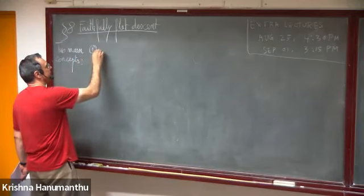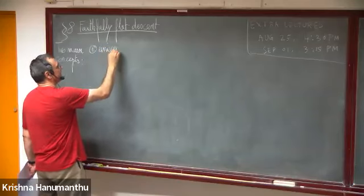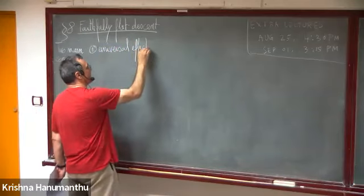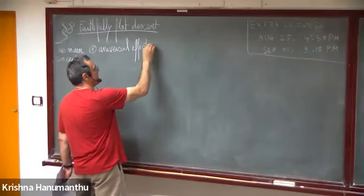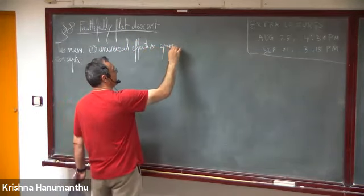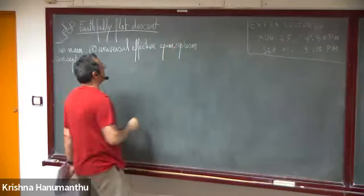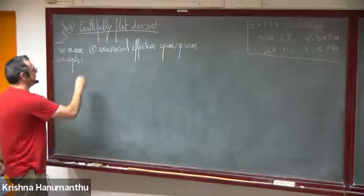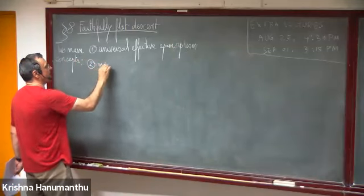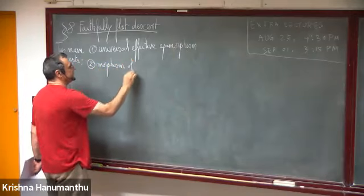The first one is a notion of universal effective epimorphism, and the second one is a notion of morphism of effective descent.